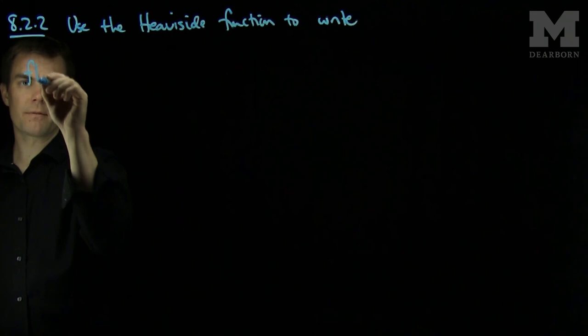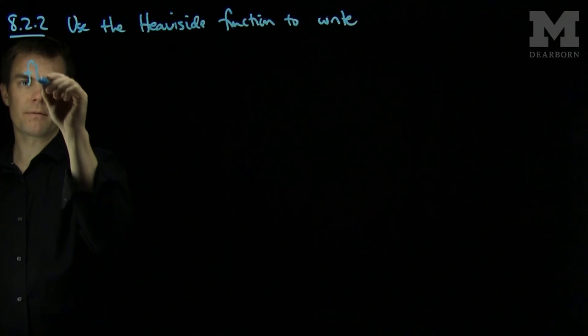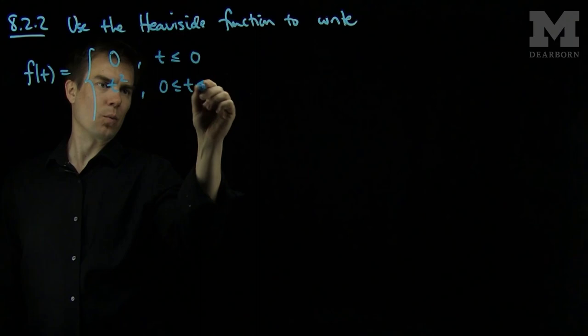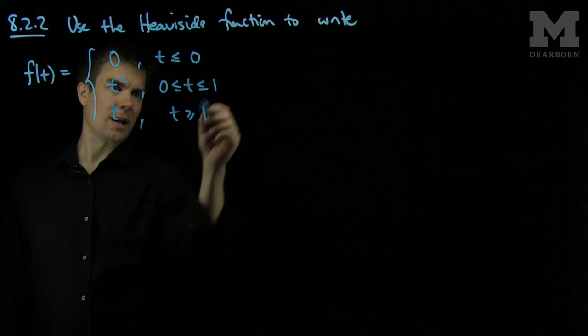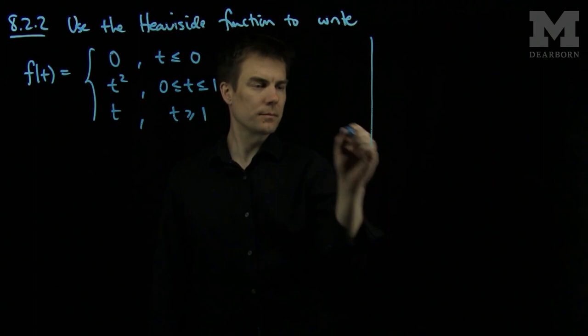to write the piecewise function f which is 0 if t is less than or equal to 0, t squared if t is between 0 and 1, and there's no problem defining with the equal sign here since 0 and 0 squared are the same. And t if t is greater than or equal to 1. Again, by the continuity there's no redundancy here.